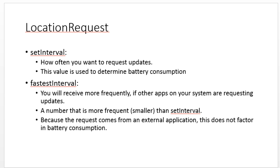Now, for the Location Request, there are three methods we want to consider: SetInterval, SetFastestInterval, and Priority. SetInterval says how frequently I want to request updates — this number will count against our battery consumption. So I might actively want to request updates maybe once per minute.